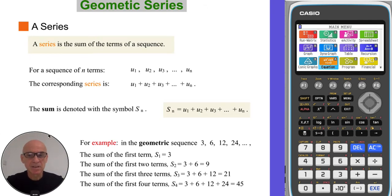A series is the sum of the terms of a sequence. So if we consider a sequence of terms u1, u2, u3 and so on, then the corresponding series is formed by placing plus signs between these terms. And the sum of the first n terms is denoted with the symbol Sn.